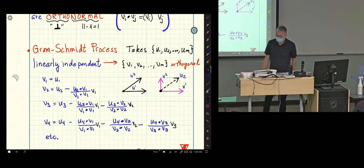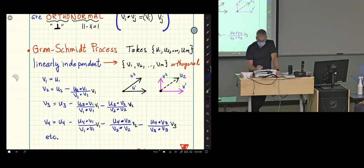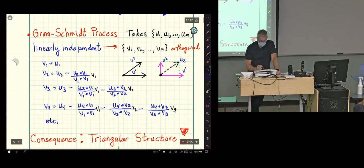Given an arbitrary set of vectors, it doesn't typically present itself as being orthogonal. But there's a process called the Gram-Schmidt process, where if I start with a set, say M linearly independent vectors, I can produce M orthogonal vectors. And it's really systematic.